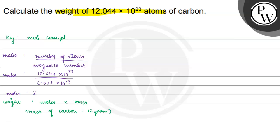So, weight equals 2 multiplied by 12. So, our final answer comes out to be that the weight of 12.044 multiplied by 10 to the power 23 atoms of carbon is 24 grams.